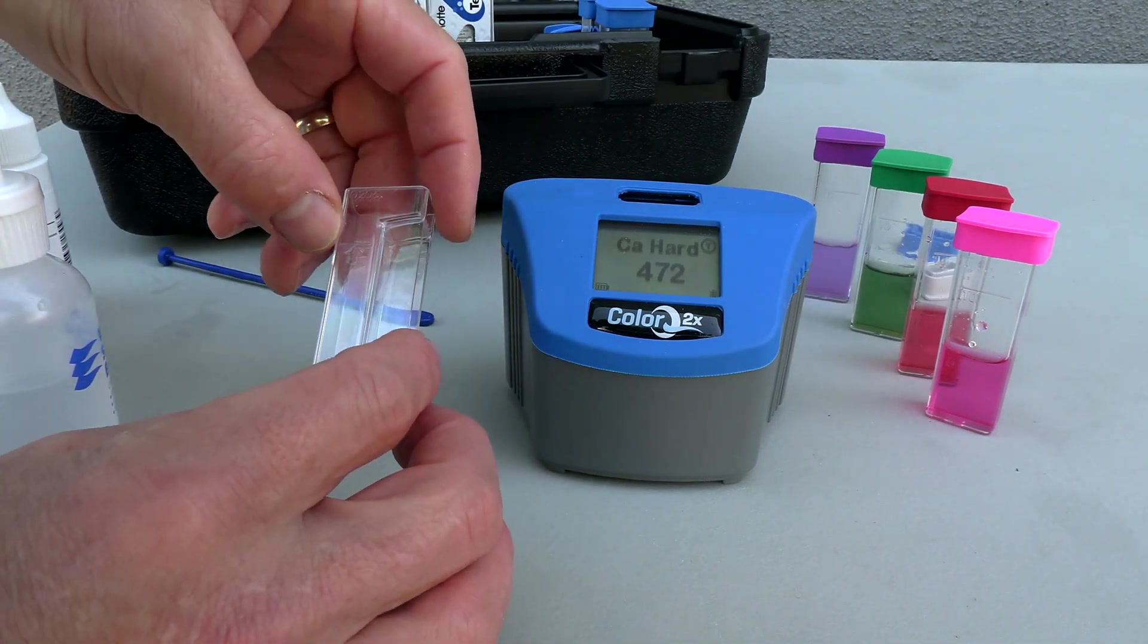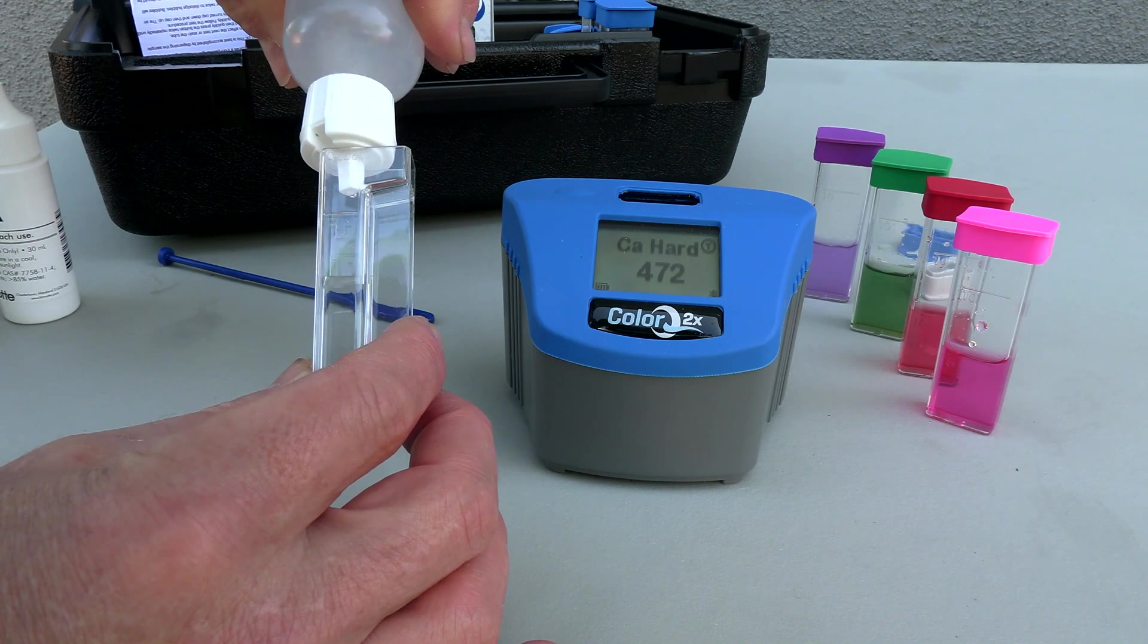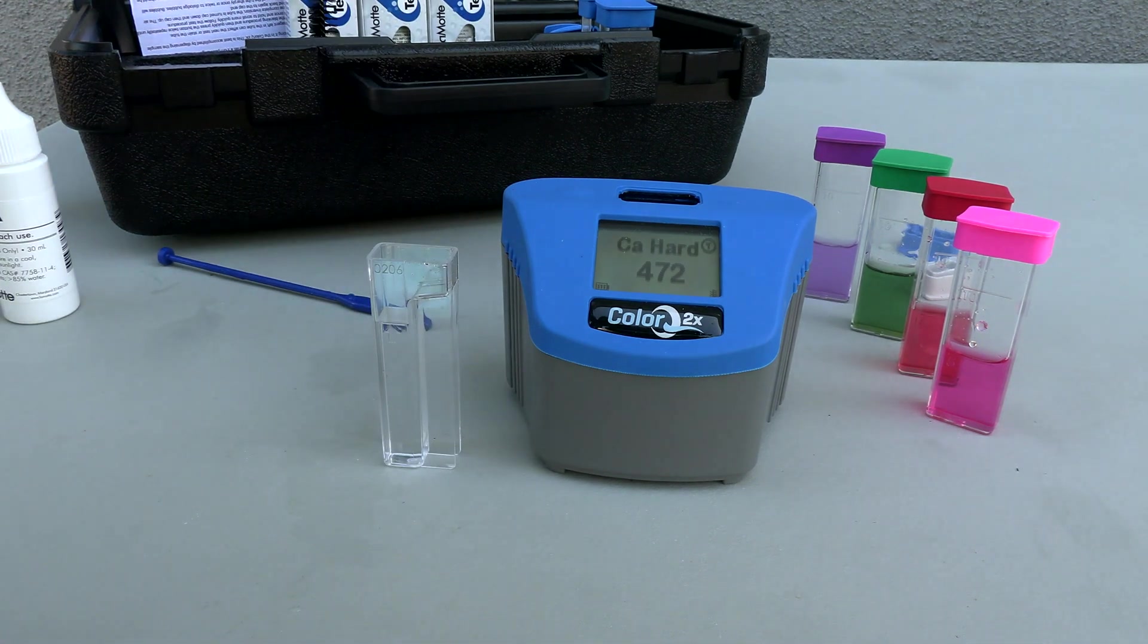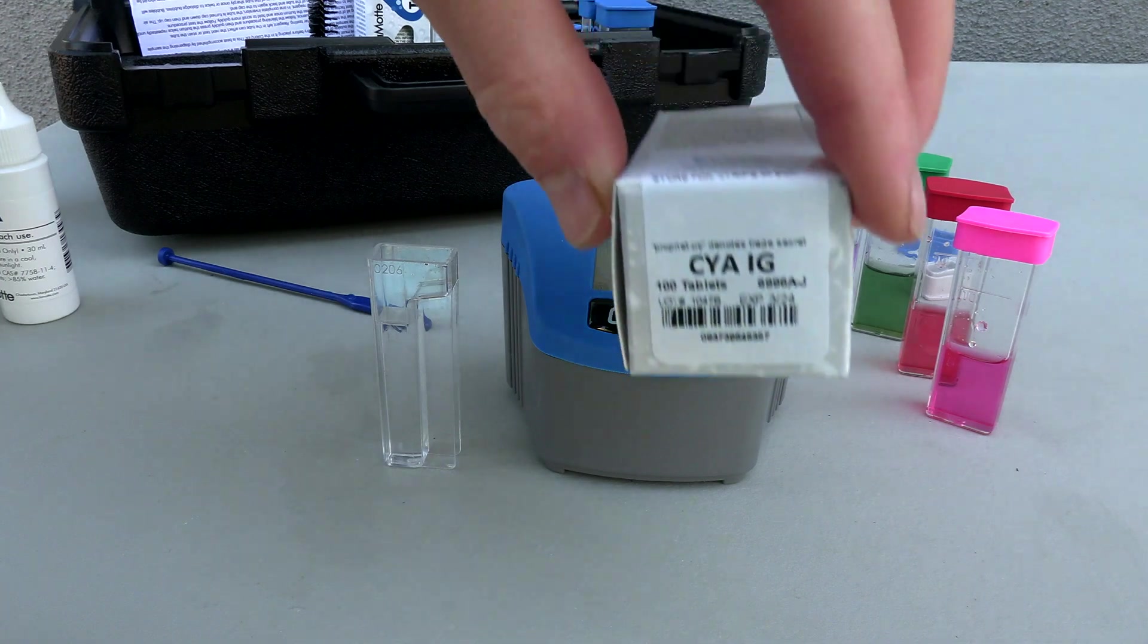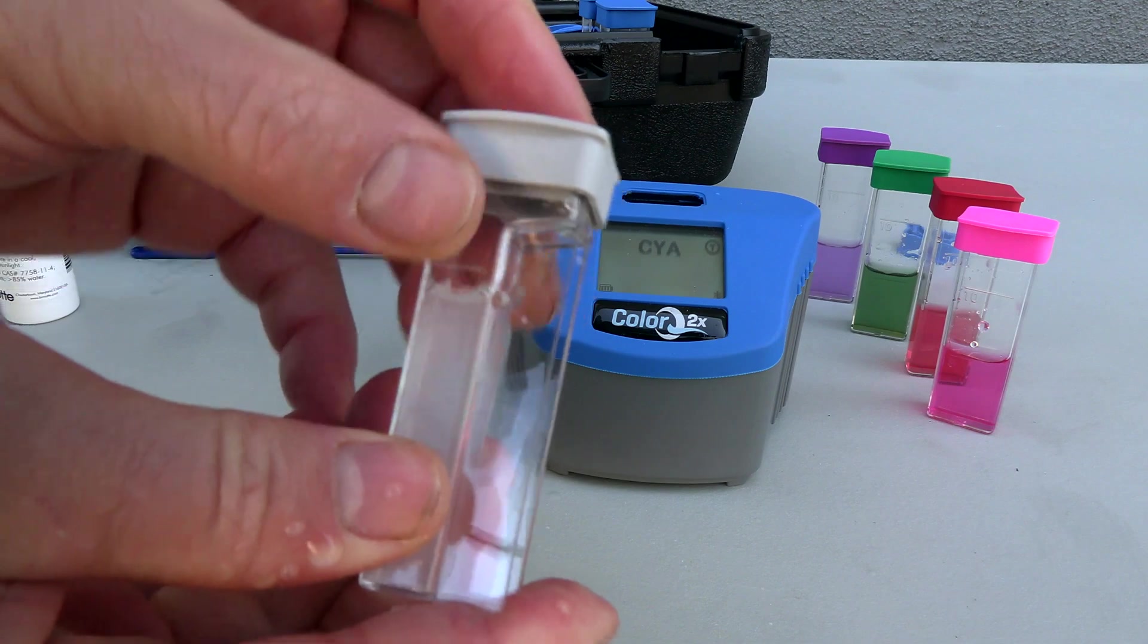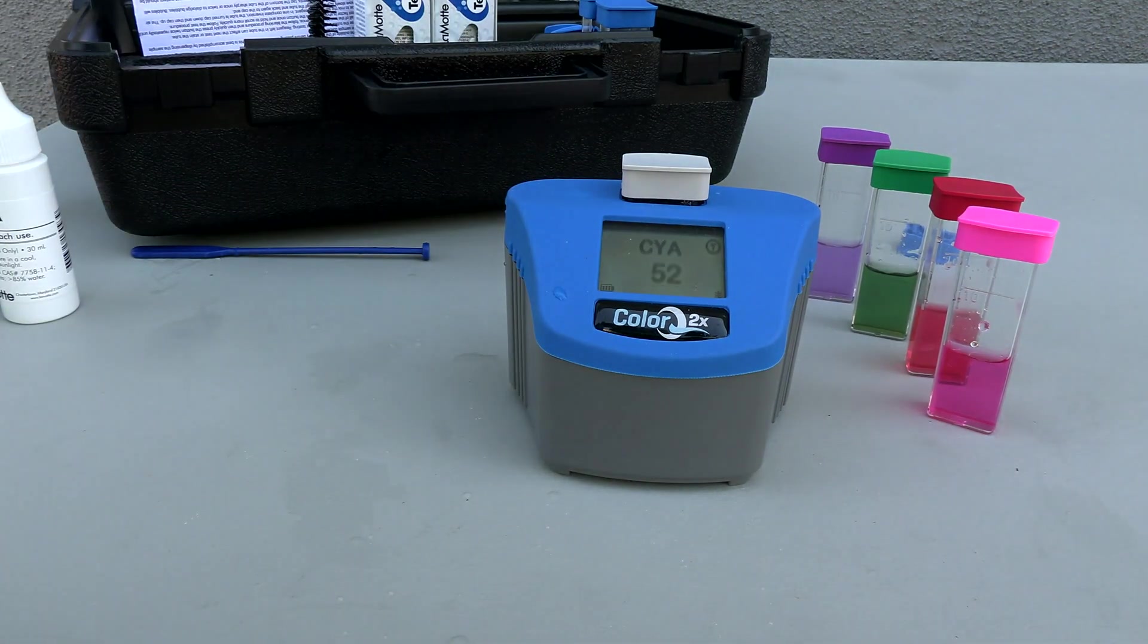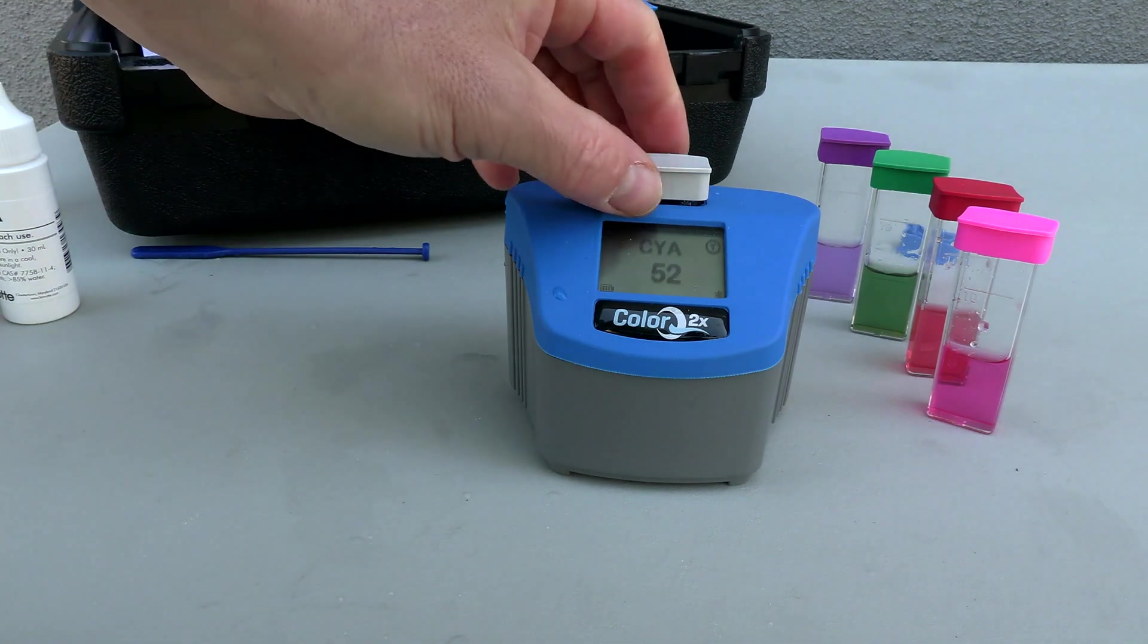For the cyanuric acid you have a special tube here. You want to fill the line up here to where the arrow is at. It's a little different than the other tests. You're going to use the cyanuric test tab, go ahead and put the gray cap on. This cyanuric acid is coming in at 52.